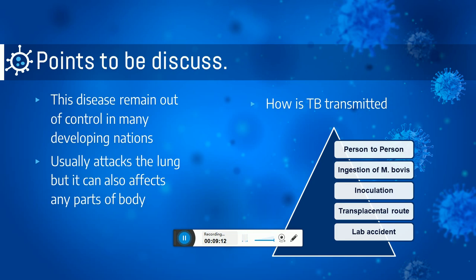Other transmission routes include inoculation — meaning introduction of any pathogenic substance or vaccine into the body to produce immunity against that specific disease — transplacental route through the placenta to the baby, and lab accident, which is a rare route. Overall, the etiology is that tuberculosis is caused by Mycobacterium tuberculosis, which is spread from person to person through the air. Mycobacterium tuberculosis are sometimes called tubercle bacilli.